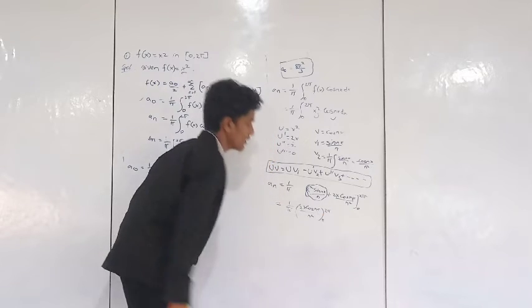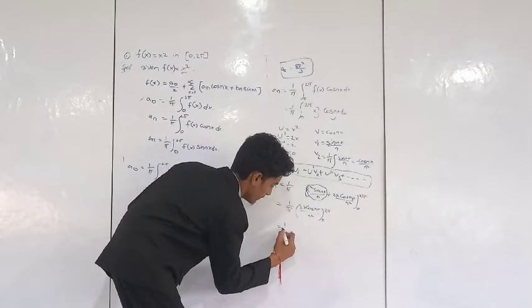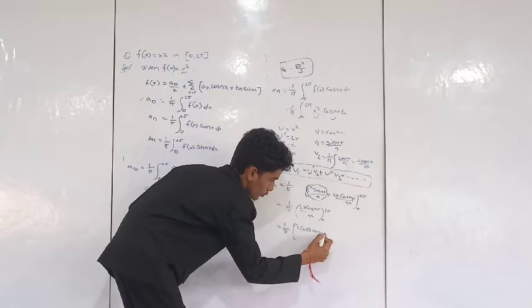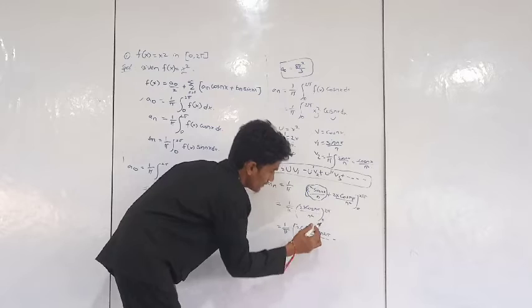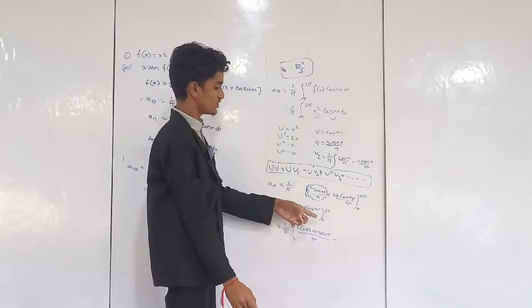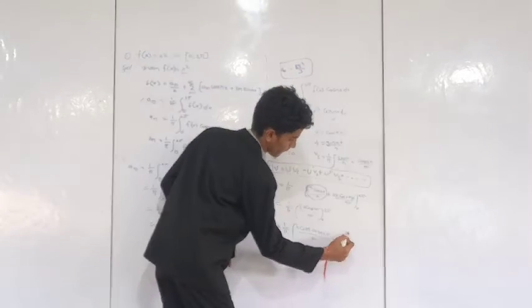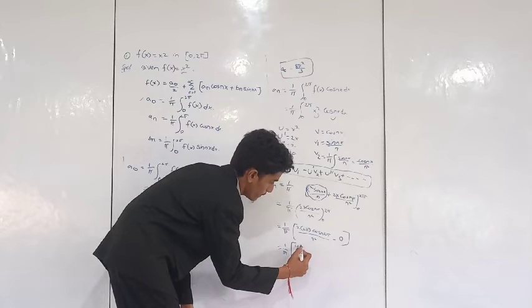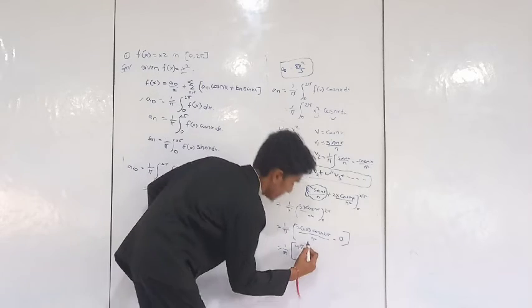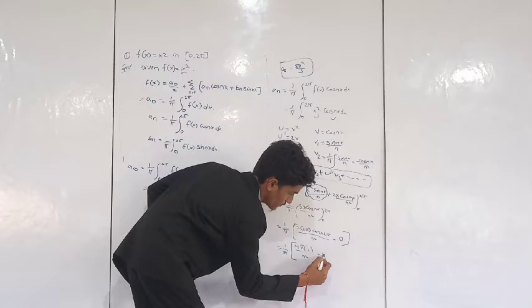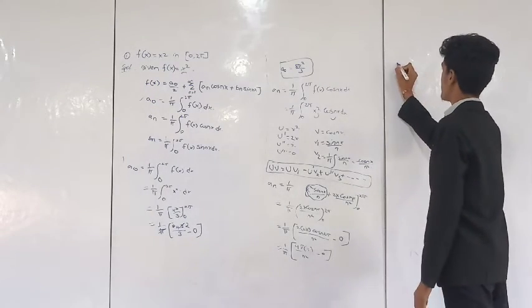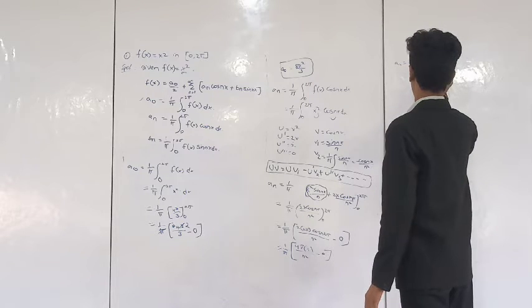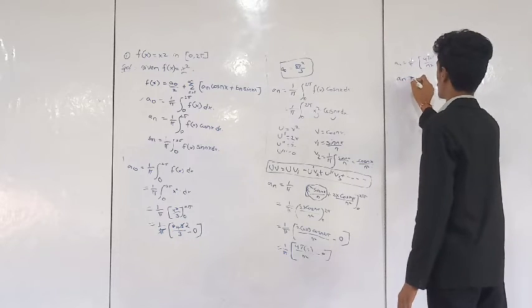This first term evaluates to 0. Then we calculate 1 by π times 2x cos(nx) by n² from 0 to 2π. Substituting x = 2π gives 1 by π times 4π cos(2nπ) by n². Substituting x = 0 gives 0. So 1 by π times 4π by n² — here π cancels — giving Aₙ equals 4 by n².